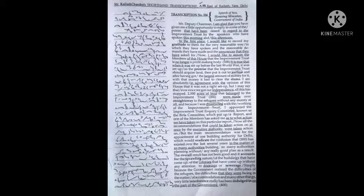Now, I would like to assure the members of this house that the Improvement Trust is no longer a profit-making body. It is true that when it was set up before the last world war, it was set up on the premise that the Improvement Trust should acquire land, then put it out to auction and after having got the largest amount of money for it, with that money it had to clear the slums.